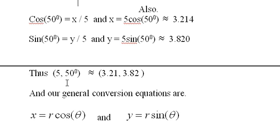Thus, 5, 50 degrees, polar form, is approximately 3.21, 3.82 in component form. And our general conversion equations for any x and y, if you have both r and theta, are x equals r cos theta and y equals r sin theta. So you don't have to figure it out each time.